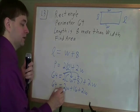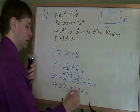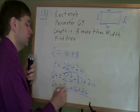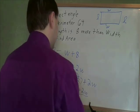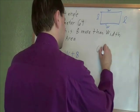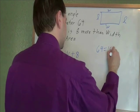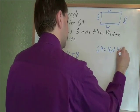And then we can simplify this right side here. We've got a 2W and another plus 2W, so we need to combine those together. 2W plus 2W is 4W. 64 equals 16 plus 4W.